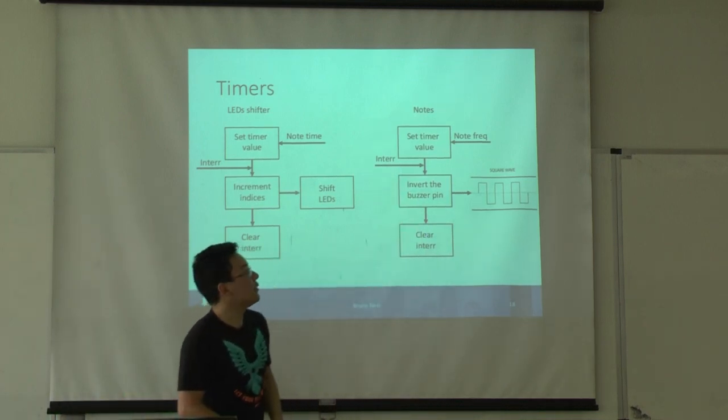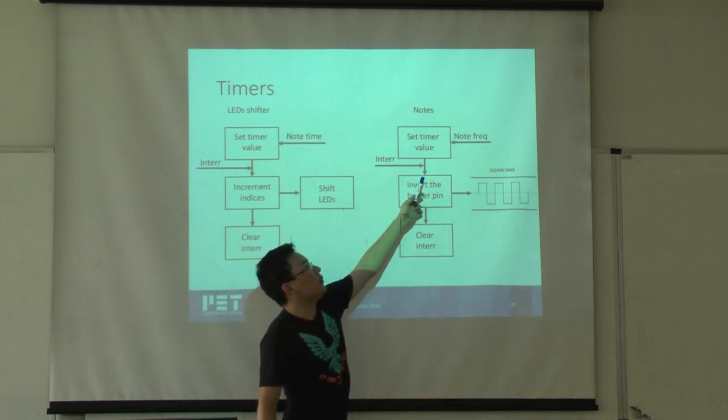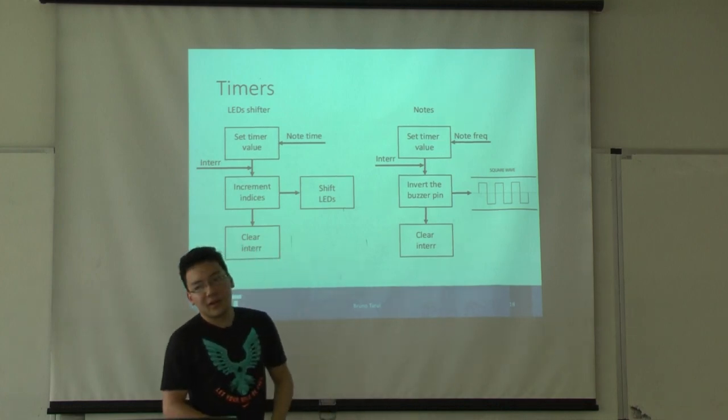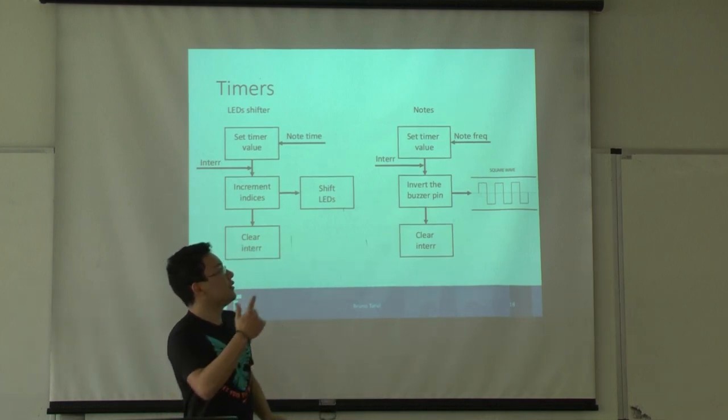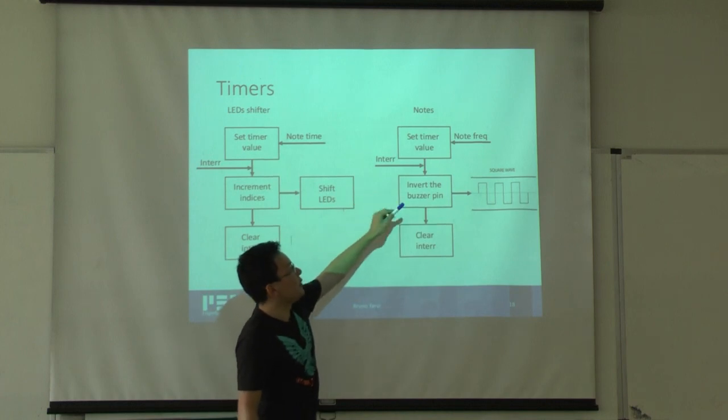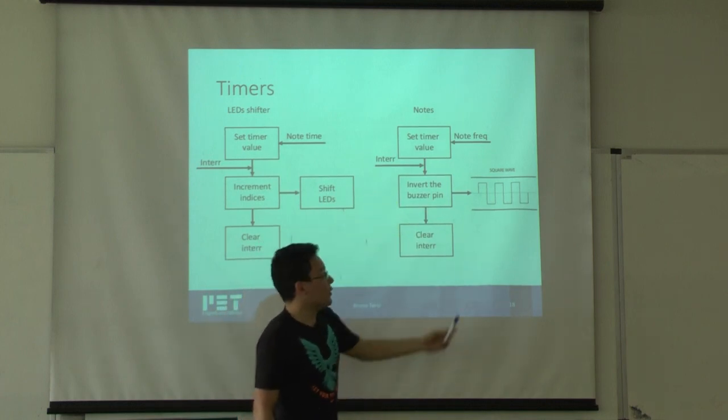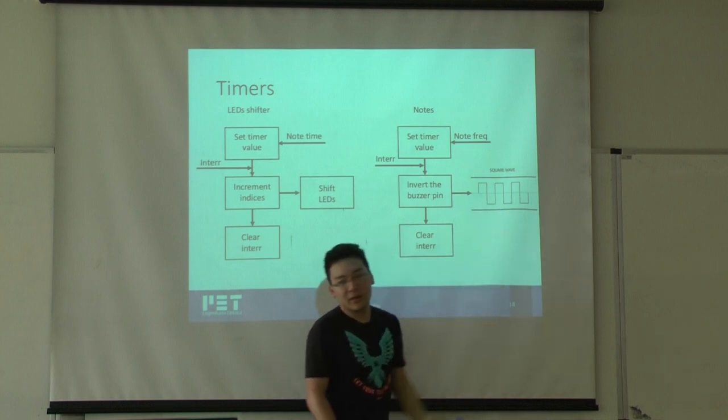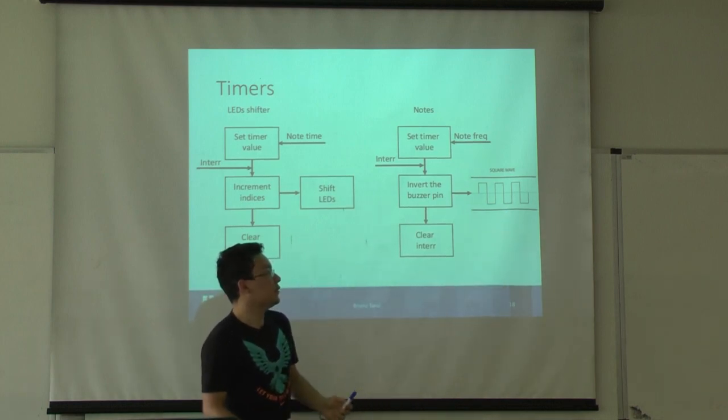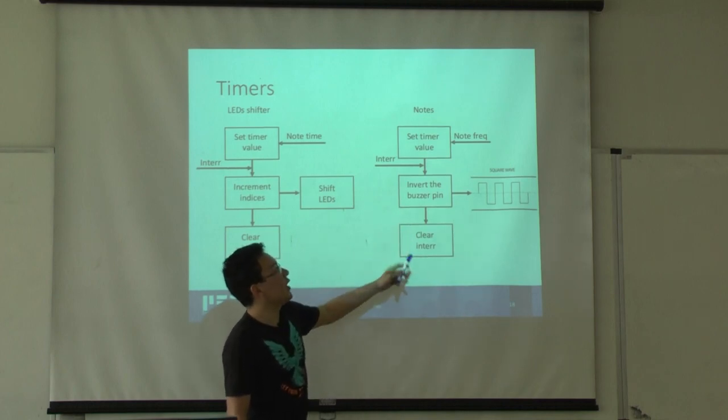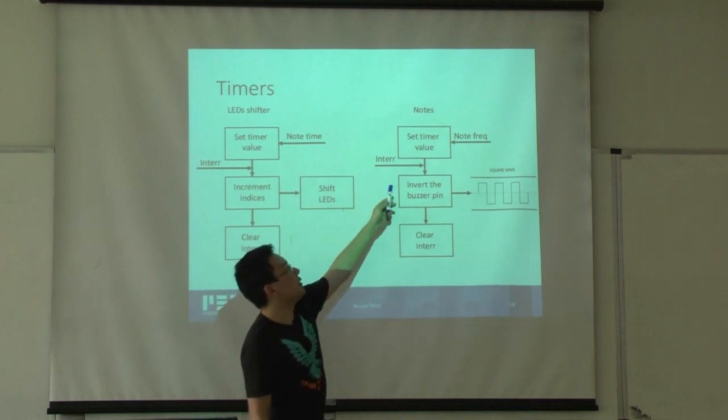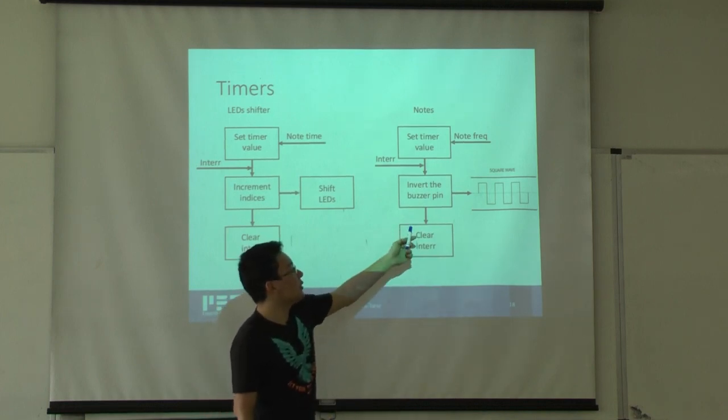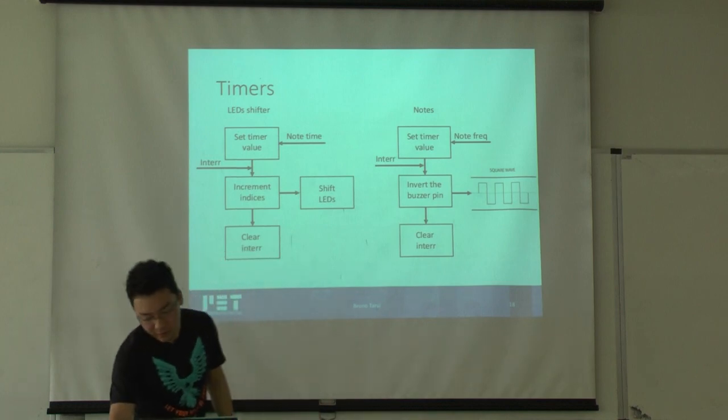The notes timer is a very quick timer. They take actually the period of the notes, the inverse of the frequency. Every time the timer reaches the frequency, the interrupt inverts the buzzer pin. So what this produces is some kind of square wave with a variable frequency that will produce different sounds and notes. It's a very quick timer. There are a lot of interruptions in the same second. When you get out of the interruption, just clear the flag and back to the main function.